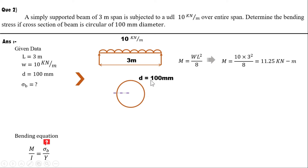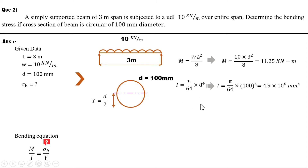For the circular section of diameter 100 mm, the moment of inertia is I = (π/64)×d⁴. Putting in d = 100 mm gives I = 4.9 × 10⁶ mm⁴.